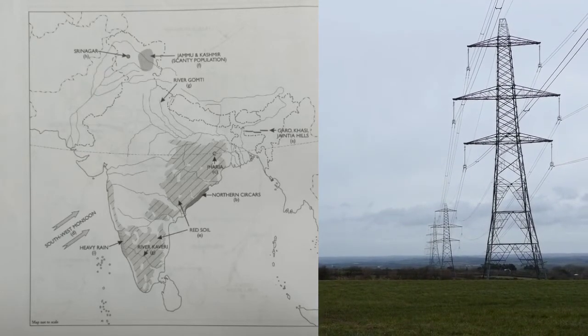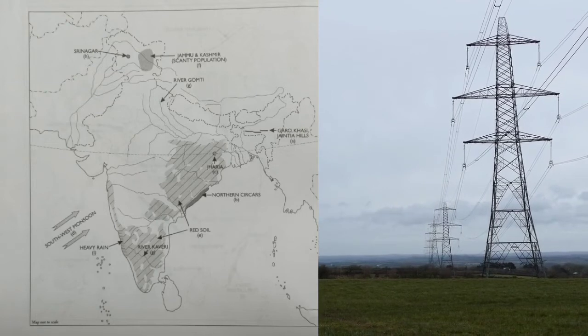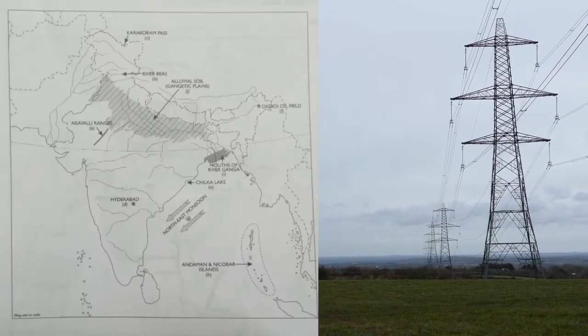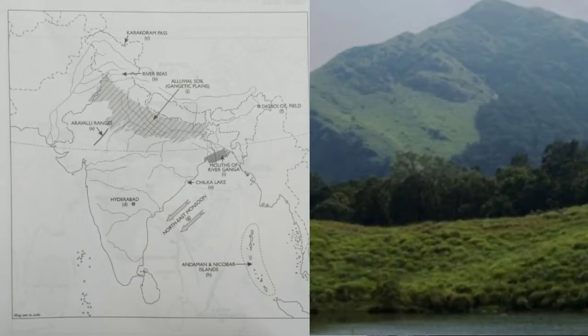Mark and name the Aravalli Range. Trace the course of river Beas. Mark and name the Karakoram Pass. Mark with a dot and name Hyderabad. Mark and name Chilka Lake. All are very important for ICSE geography map pointing.